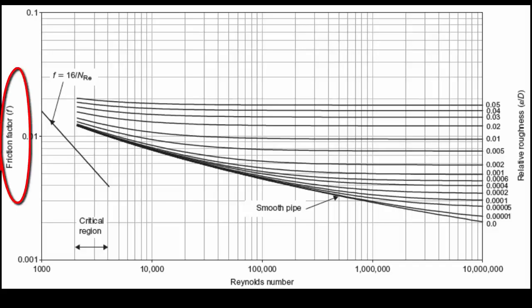We can see the Moody diagram here. On the y-axis, we have friction factor. On the x-axis, Reynolds number. You will notice the linear line here, which represents the laminar region up to about 2100. And then for the turbulent region, we have different curves.